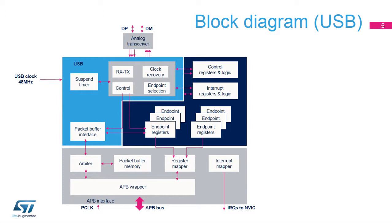The USB interrupt goes to the Cortex processor to signal various USB events. The AHB peripheral bus, or APB, enables read-write access of the controller. Other key elements are the packet buffer memory and the suspend timer, allowing low power operation.